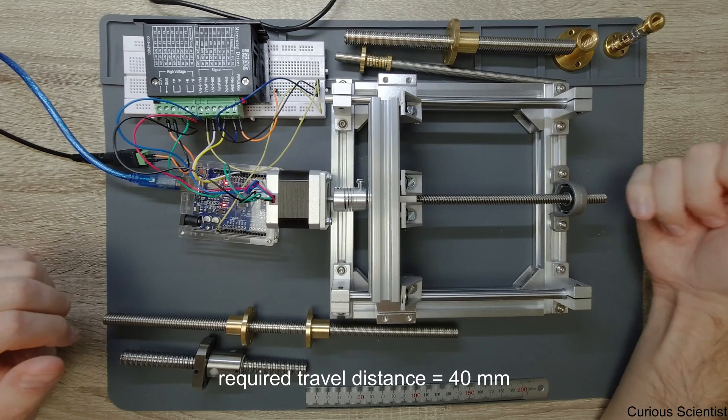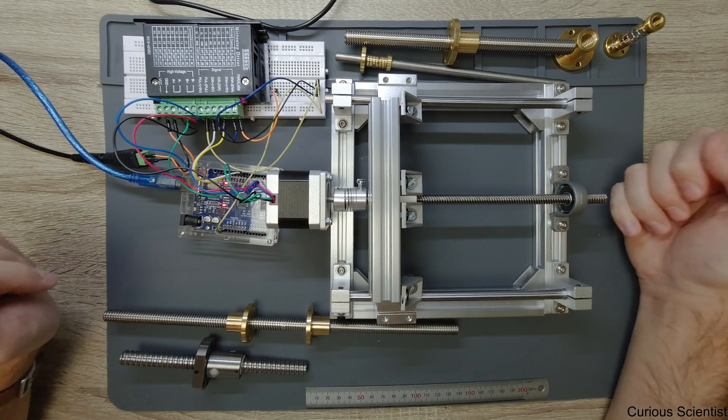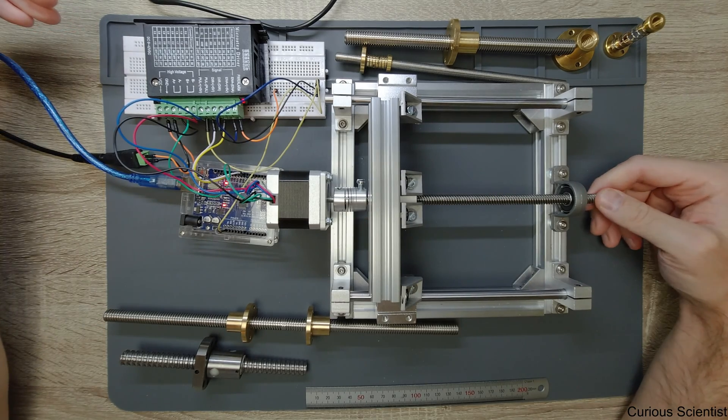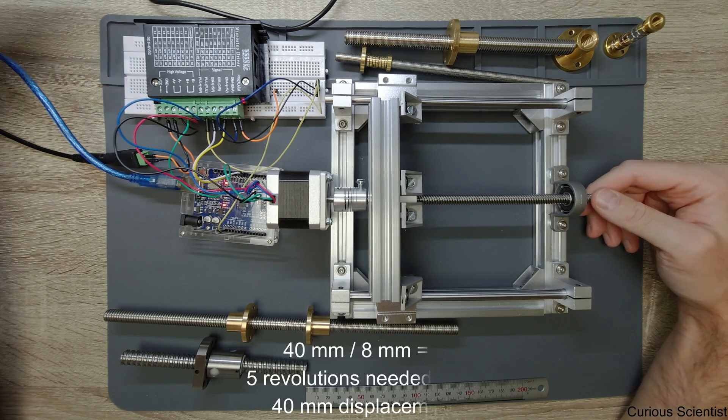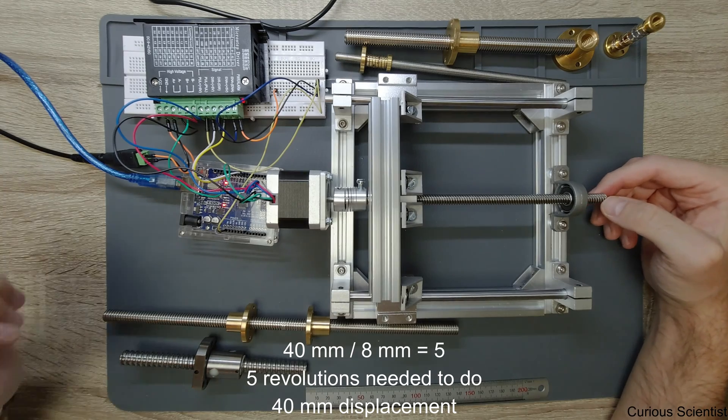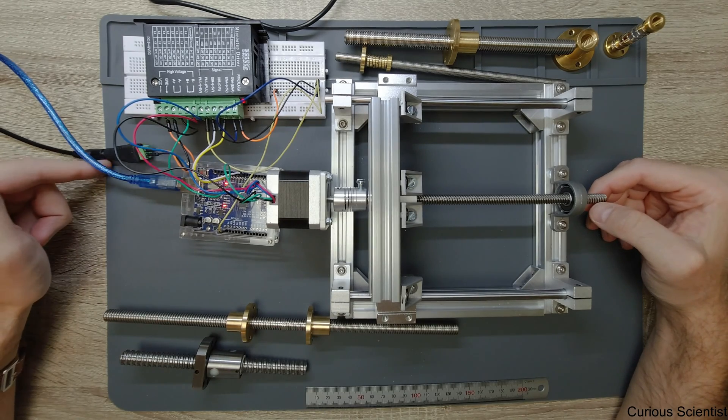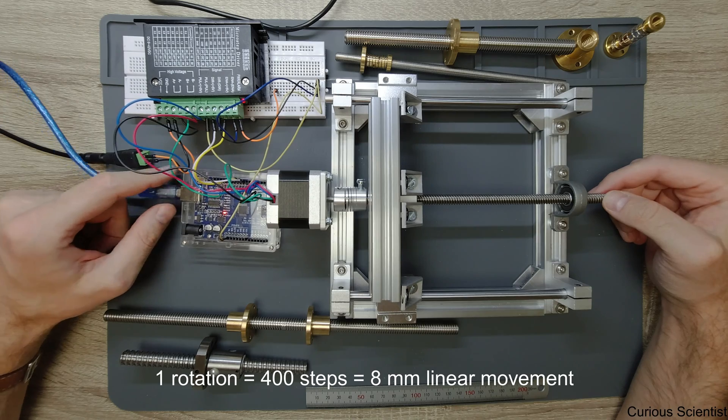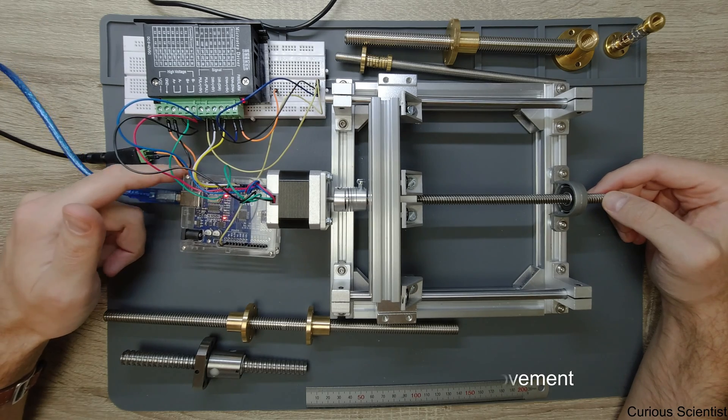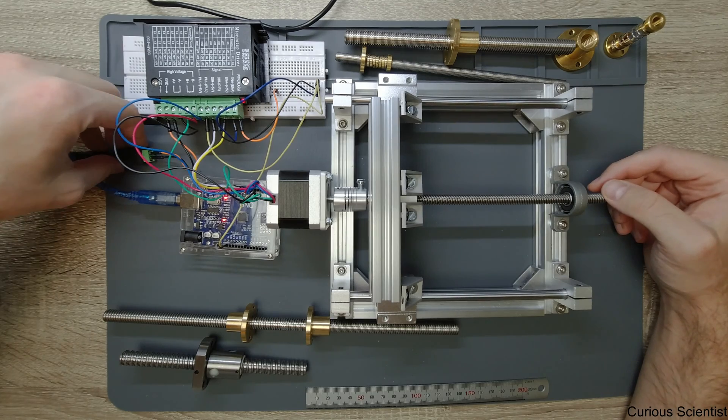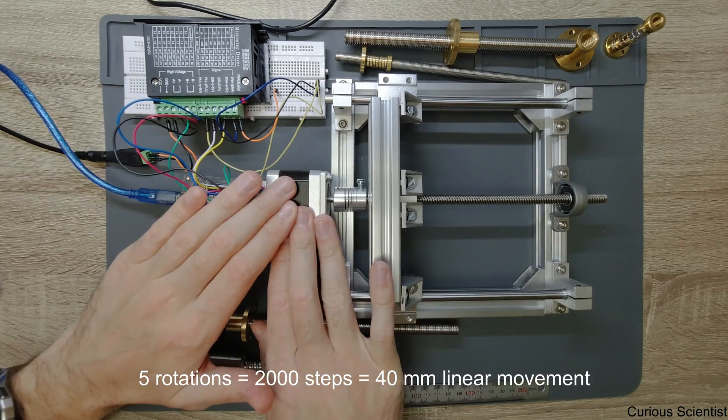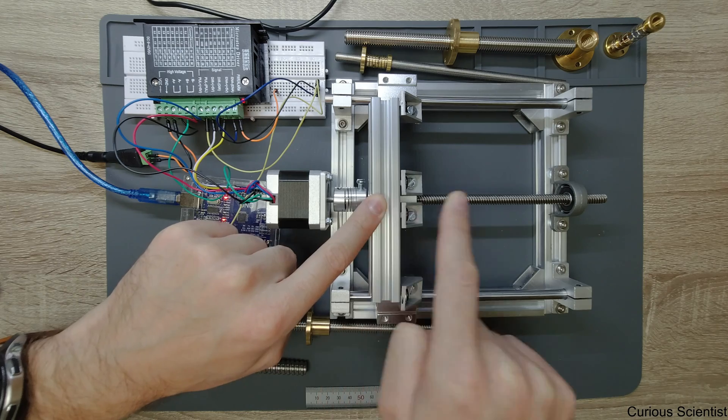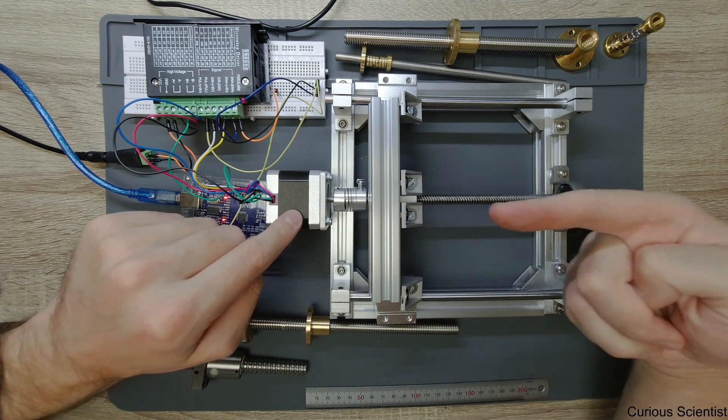We know that one rotation will cause eight millimeter movement in this direction. So we want four centimeters, so basically five times eight millimeter, that is four centimeters. Then we also know that one rotation, so eight millimeter movement, is 400 steps. So we have to multiply that also by five, and then that is 2000. So we step 2000 steps and then this thing will move four centimeters in some direction. We don't want to move it against or towards the motor. So we move in that direction.